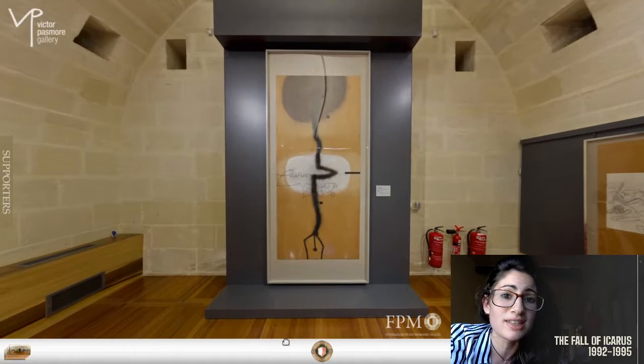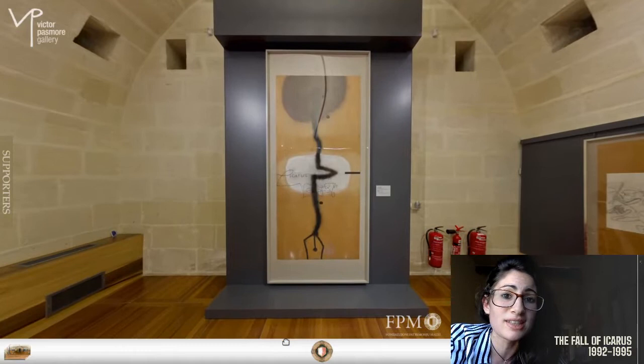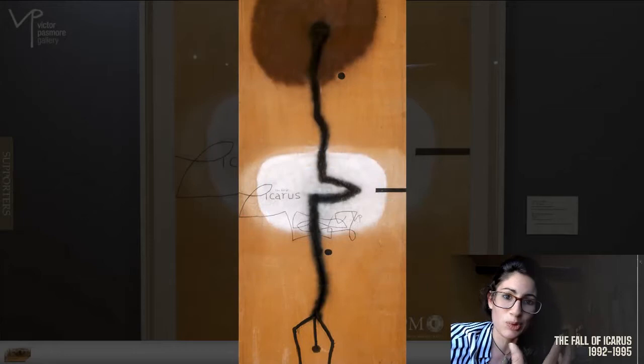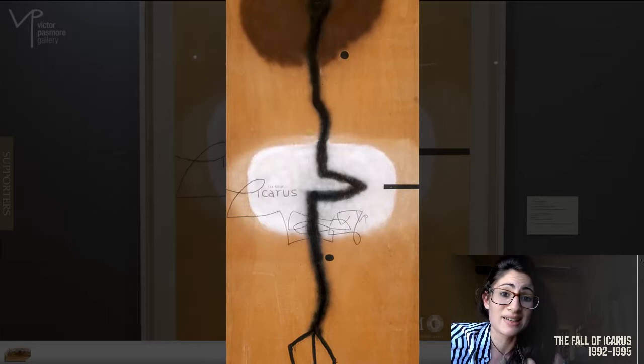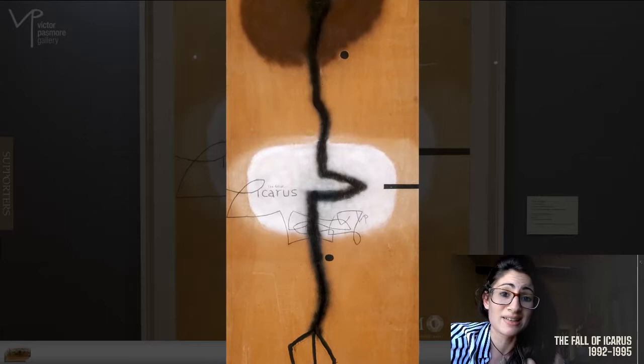Currently, you can see on your screens an image, a painting from the gallery itself which is titled The Fall of Icarus and this is just one of several examples to illustrate this connection between myth, poetry, and his painted works.